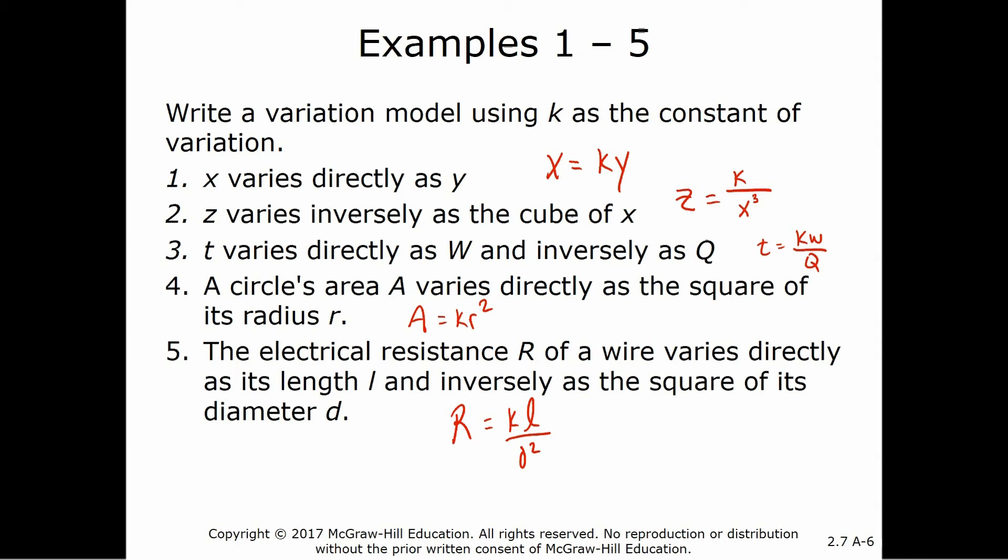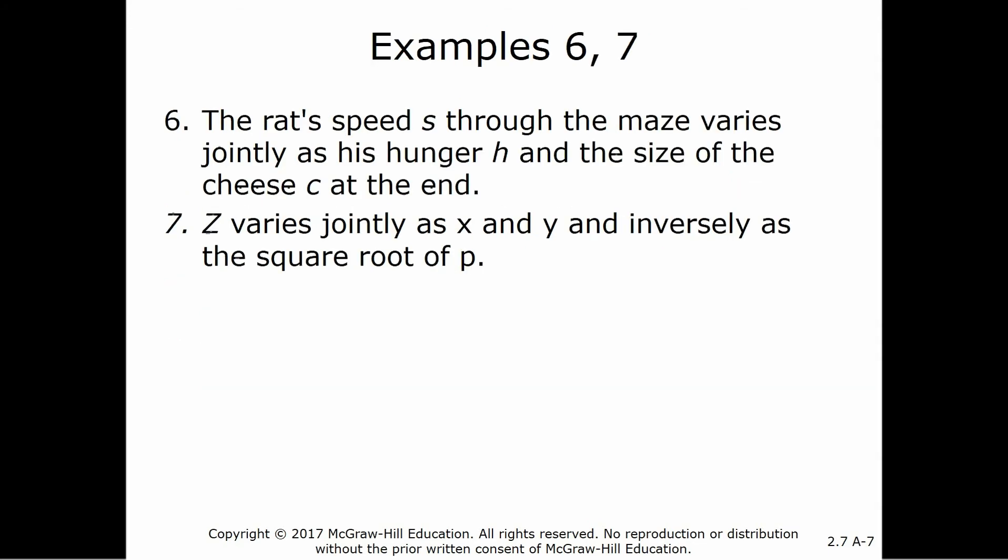I hope you're following this. It's making a little bit of sense. You see that anytime we vary directly, we multiply times k. And anytime we vary inversely, we divide by whatever we're inversely related to. Here we've got the rat's speed through a maze. So s varies jointly as his hunger and the size of cheese at the end. So k h c.